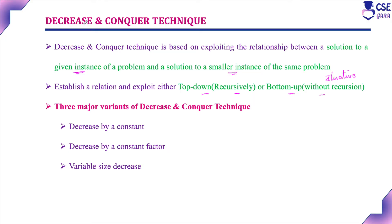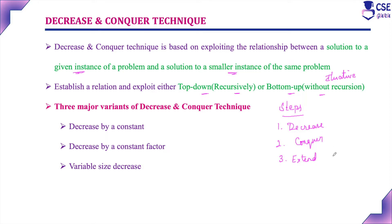As the name suggests, decrease and conquer has three steps. The first step is decrease — reduce the problem size to a smaller instance, that is a sub-problem. The second step is conquer — find the solution for that smaller instance. The third step is extend — take the solution found for the smaller instance and apply the same method to other sub-problems, so that finally we get the solution for the original problem.